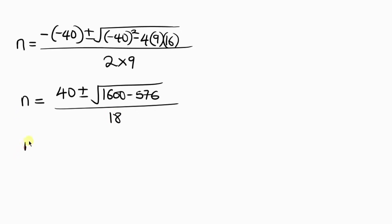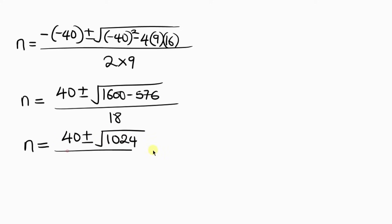The square root of 1024 is 32. So n equals 40 plus or minus 32, all over 18.